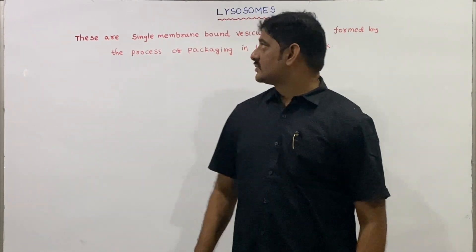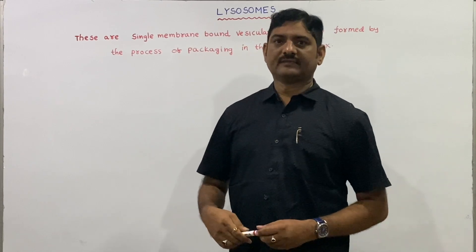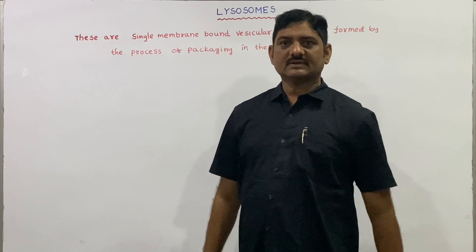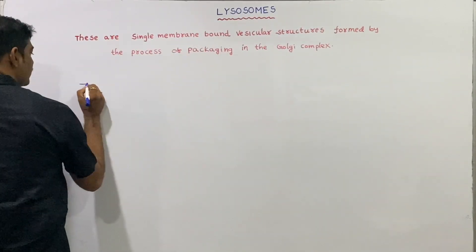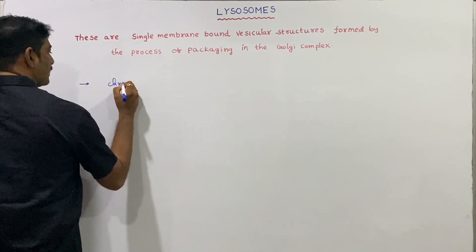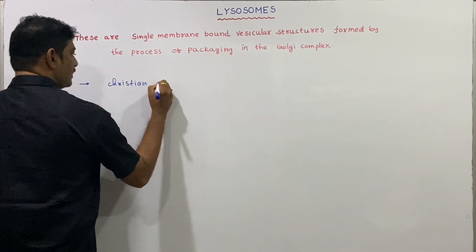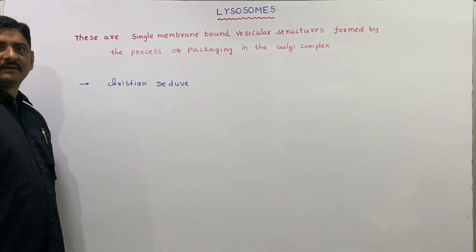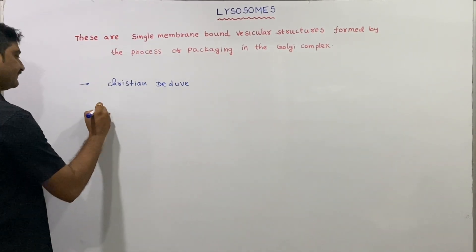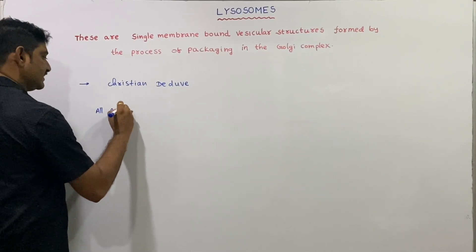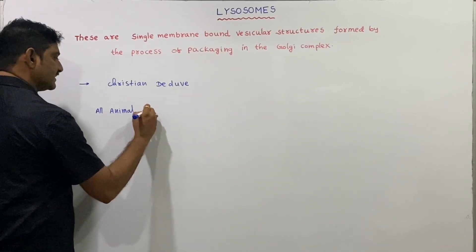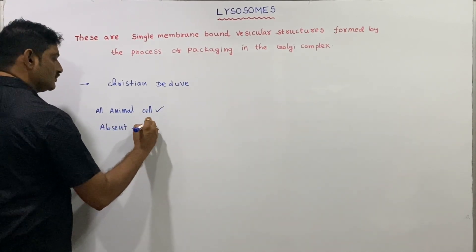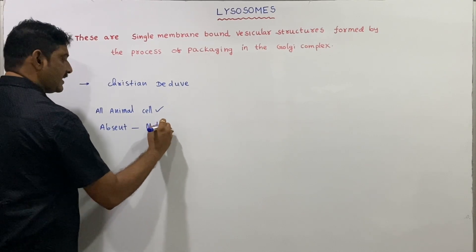We discussed lysosomes. The credit for observation and discovery of lysosomes goes to Christian de Duve. They are present in all animal cells except mature RBCs — mature red corpuscles.